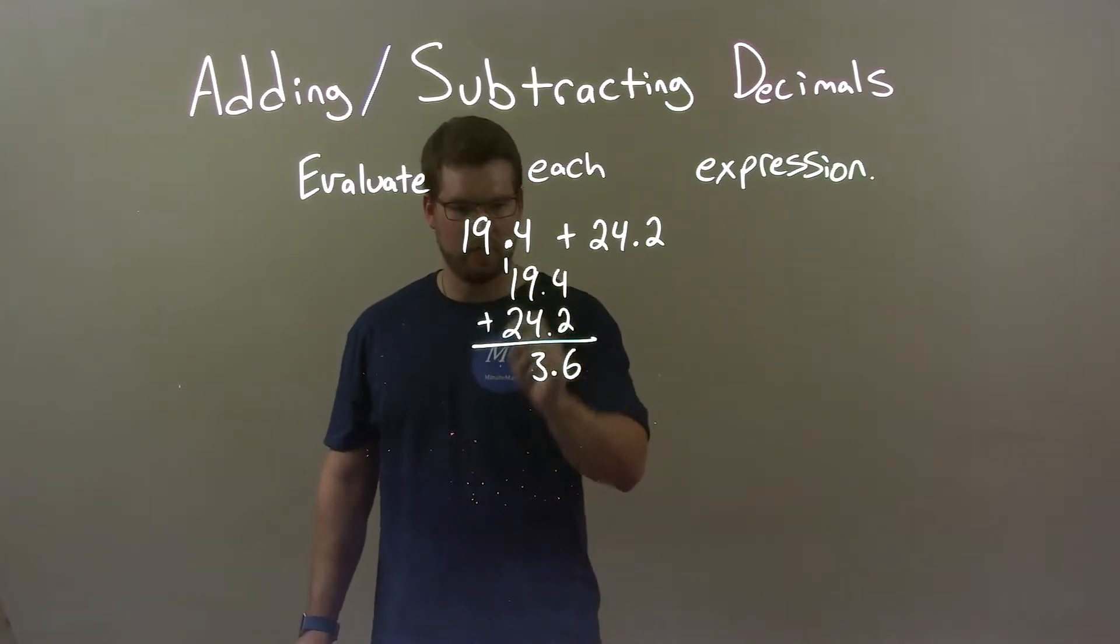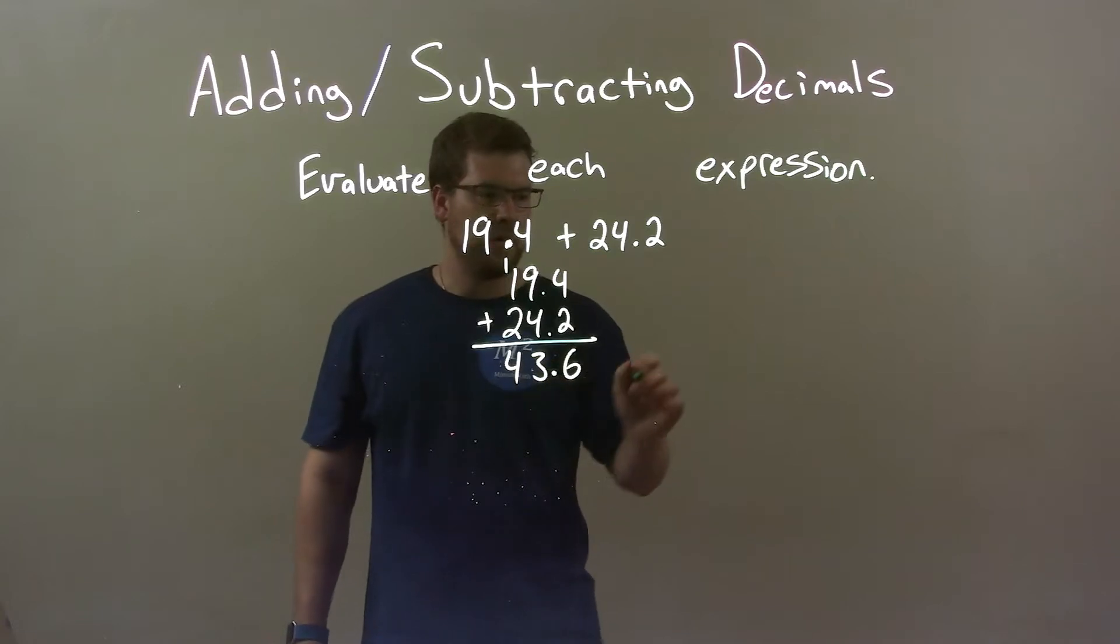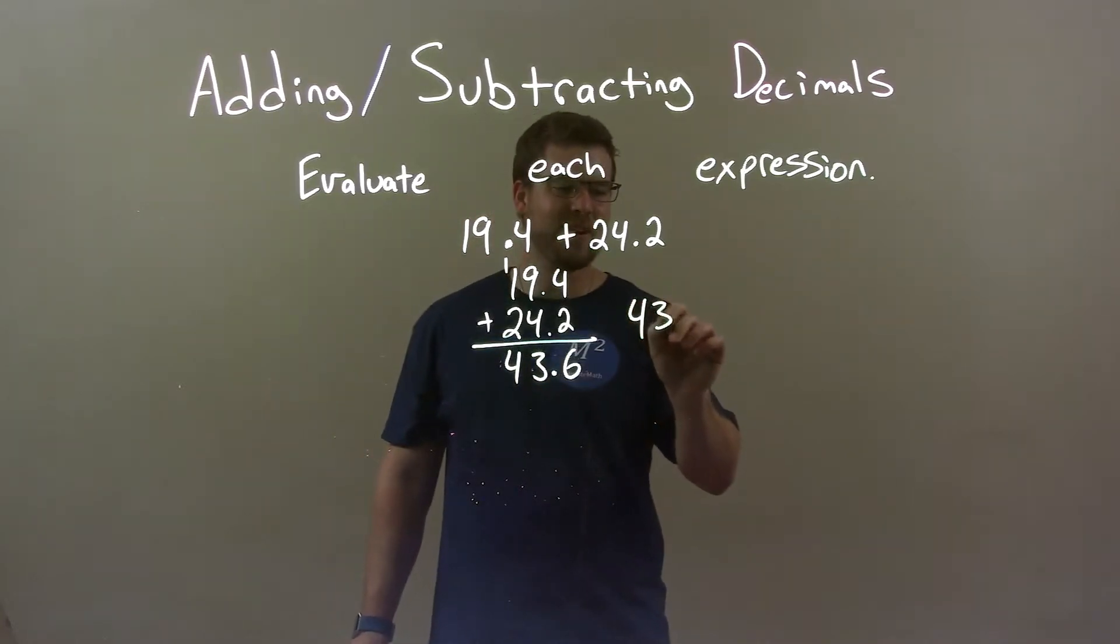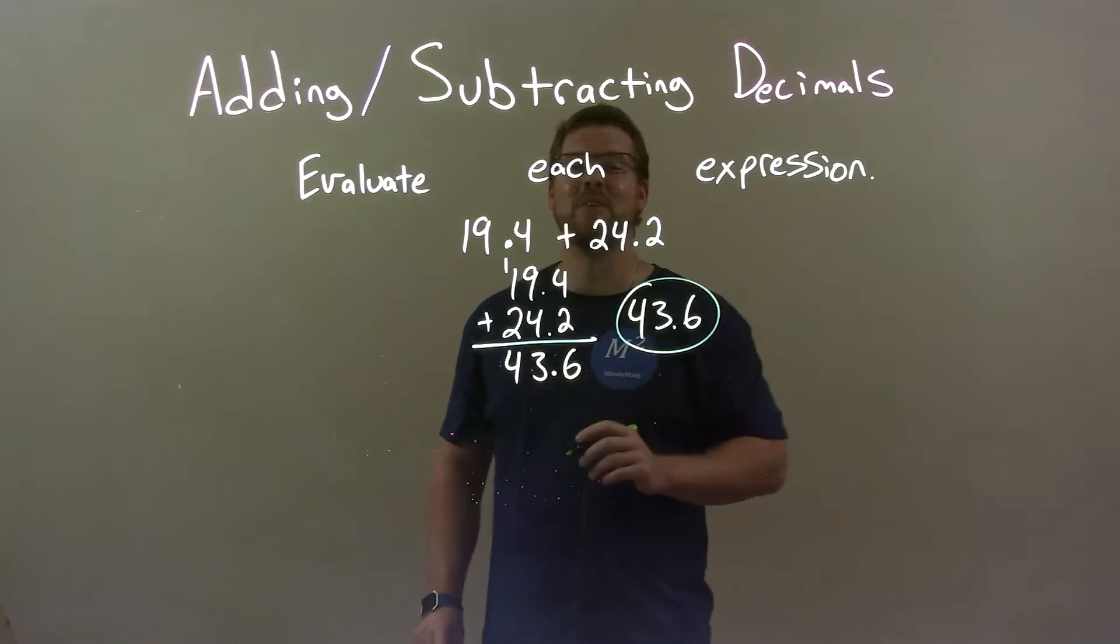1 plus 1 is 2, plus 2 is 4. So 43.6 is our final answer.